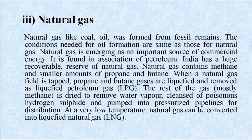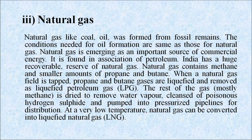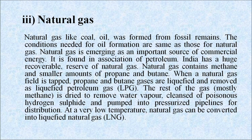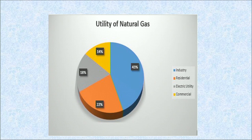Natural gas, like coal and oil, was formed from fossil fuels. The conditions needed for oil formation are the same as those for natural gas. Natural gas is emerging as an important source of commercial energy and is found in association with petroleum. India has a huge recoverable reserve of natural gas. Natural gas contains methane and smaller amounts of propane and butane. When a natural gas field is tapped, propane and butane are liquefied and removed as LPG. The rest is dried, cleansed of poisonous hydrogen sulfide, and pumped into pressurized pipelines. At very low temperature, natural gas can be converted into liquefied natural gas (LNG). The pie chart shows 43% used by industry, 22% residential, 18% electric utility, and 14% commercial purposes.